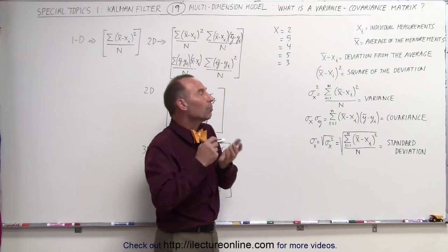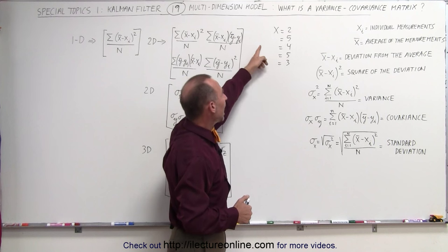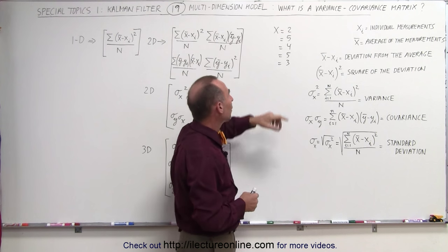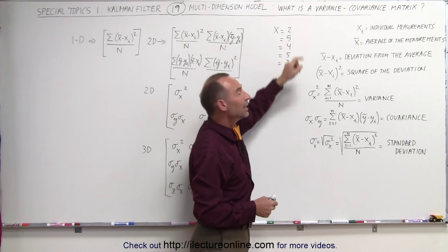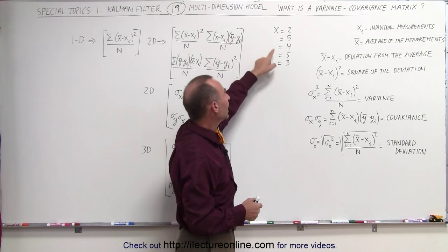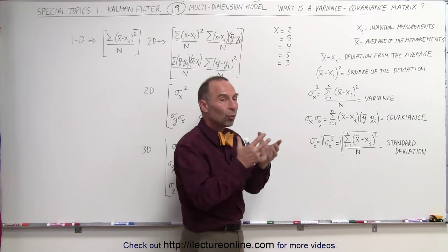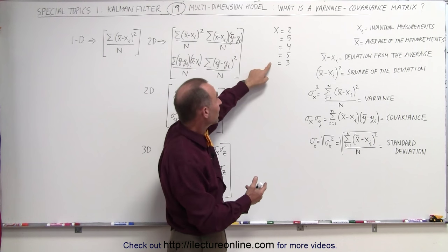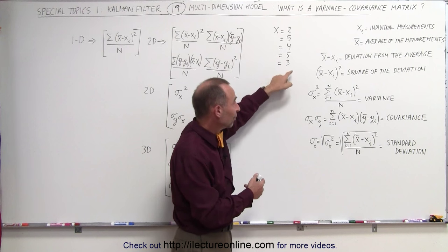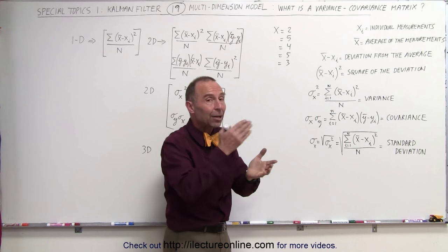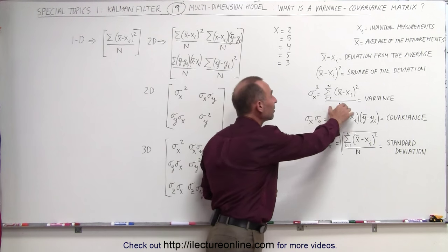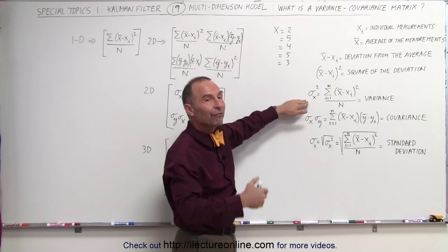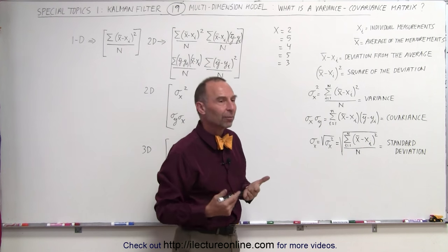If we now sum them all up — take the average, subtract the first reading and square that; take the average, subtract the second reading and square that; repeat for the third, fourth, and fifth readings — and add them all up, then divide by the number of readings (in this case n equals 5), that's called the variance. That's where the variance comes from.